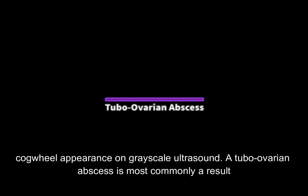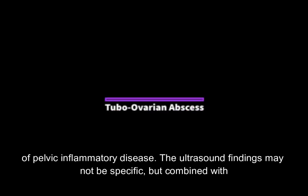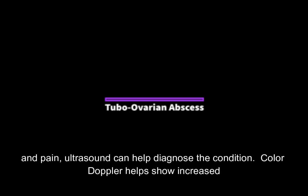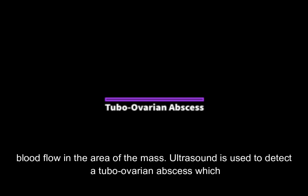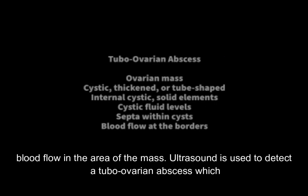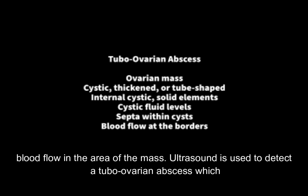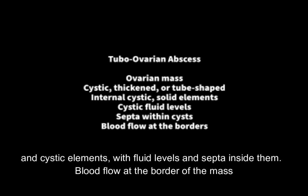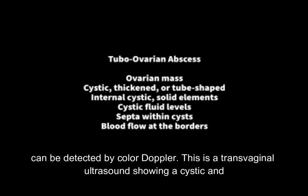A tubo-ovarian abscess is most commonly a result of pelvic inflammatory disease. The ultrasound findings may not be specific, but combined with the clinical symptoms of high white blood cell count, increased sedimentation rate, fever, and pain, ultrasound can help diagnose the condition. Color Doppler helps show increased blood flow in the area of the mass. Ultrasound detects a tubo-ovarian abscess which appears as a cystic, thickened, or tubular ovarian mass. The cyst may contain both solid and cystic elements, with fluid levels and septa inside. Blood flow at the border of the mass can be detected by color Doppler.